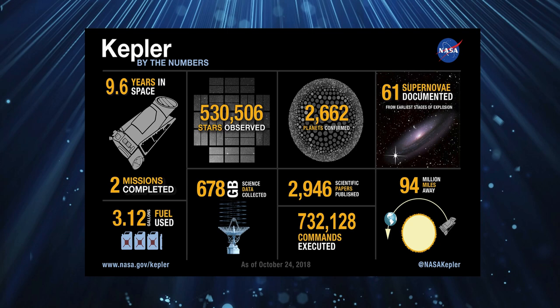Only planets whose orbits are edge-on as seen from Earth can be detected by this method. During its over nine and a half years of service, Kepler observed 530,506 stars and detected 2,662 planets.